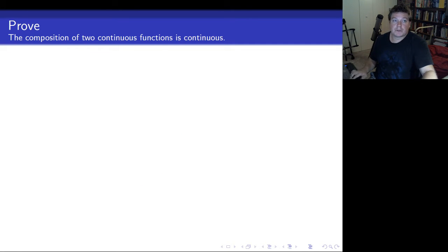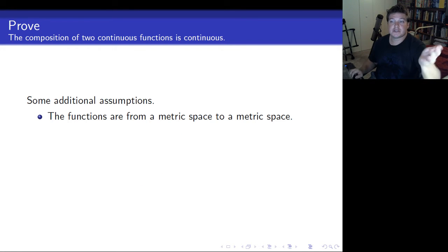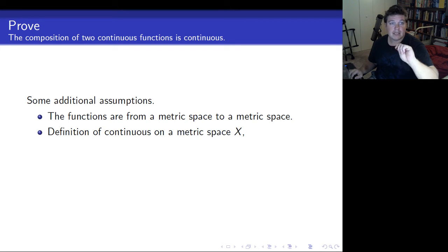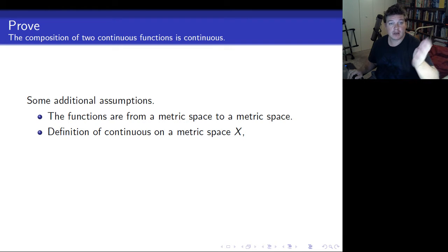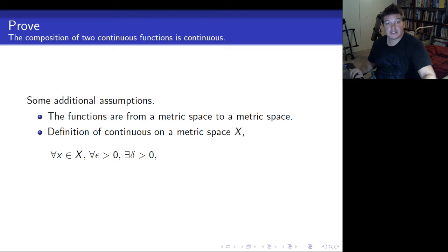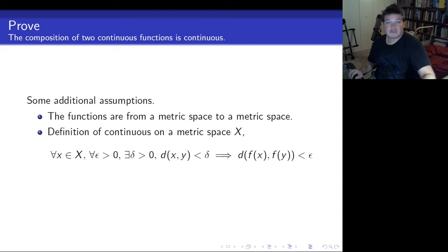We're going to make the additional assumption that the functions are from a metric space to a metric space. You can think of the real line, and anytime I mention a metric just use the absolute value of x minus y. In order to do this we need the definition of continuity on a metric space: for every point you are continuous at that point, so for every epsilon greater than zero there exists a delta greater than zero such that if the distance between x and y is less than delta, the distance between their images is less than epsilon. That's really all we're going to use.